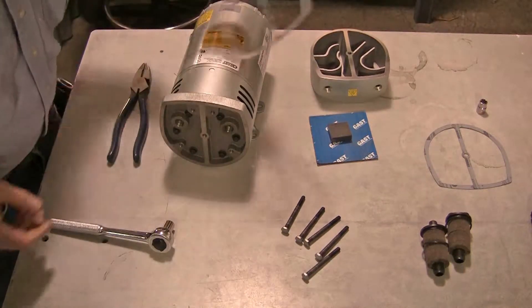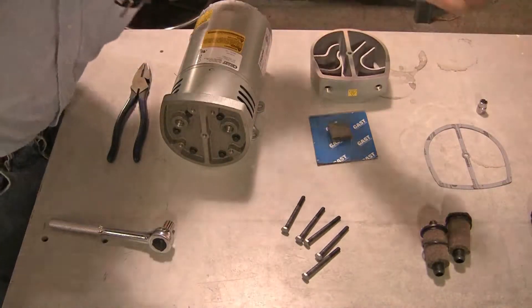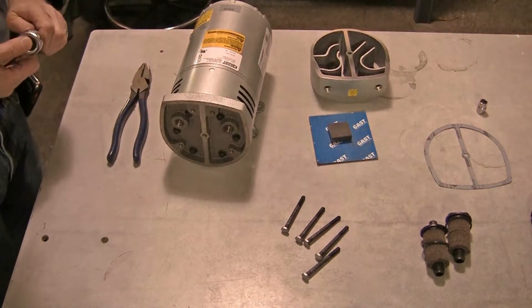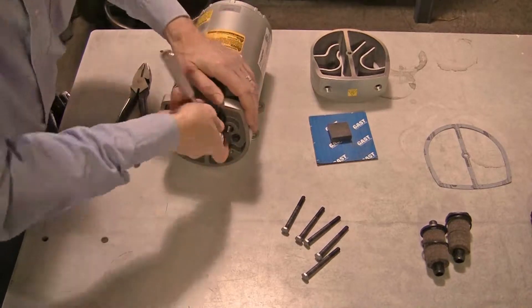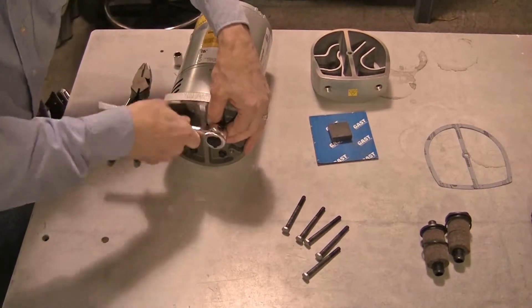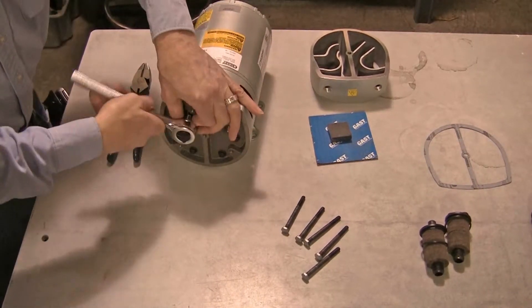If the gasket is damaged, discard the gasket. Remove the 6 endplate bolts using the ratchet and 3/8th inch socket. Remove the endplate and shroud.